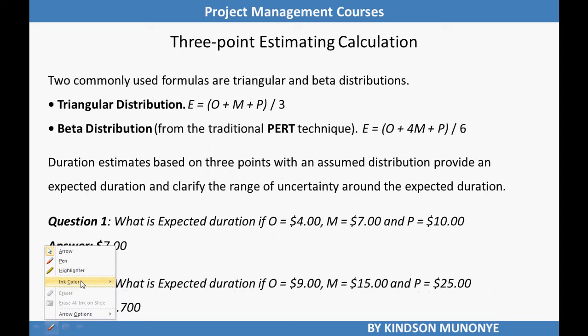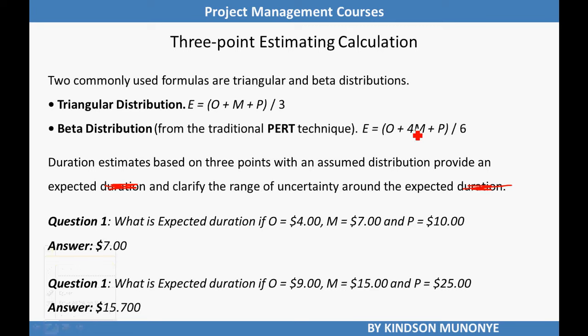Cost estimates based on three-point estimates with an assumed distribution provide an expected cost that clarifies the range of uncertainty around expected costs. Remember, we are discussing estimate costs, not duration. There are some exercises provided: calculate the expected costs using both the triangular and beta distributions. Try to pause the video, pick up a pen and paper and a calculator, and do these two calculations to check if you come up with the same answers.